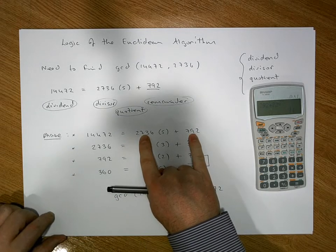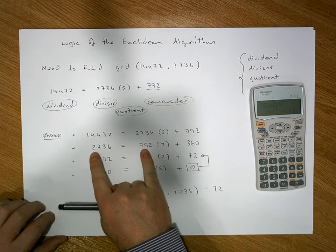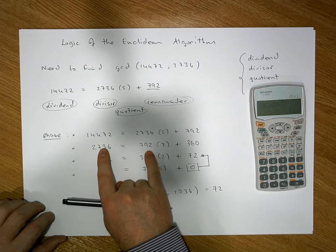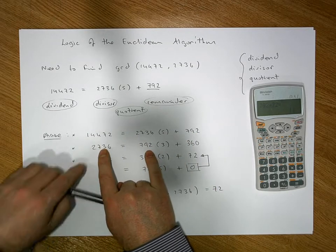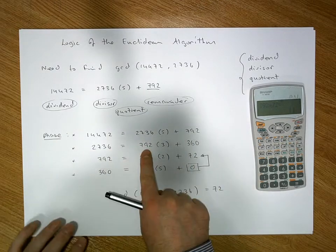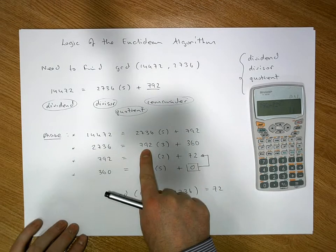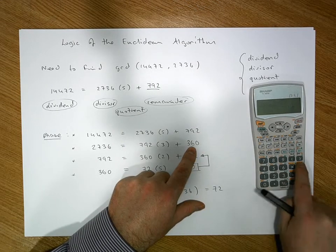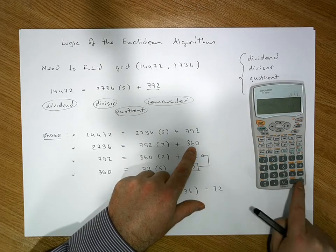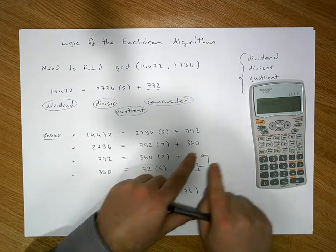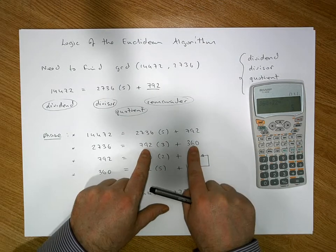Now we know that 72 divides into this number and this number. When we bring these down, we know that 72 divides into this for the last step. If it divides into this, it must divide into the whole thing. But we know it divides into this, so it must also divide into this. Let's check: 360 divided by 72 goes in five times. Brilliant. So now we know 72 divides these two numbers.